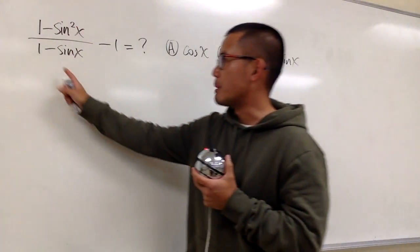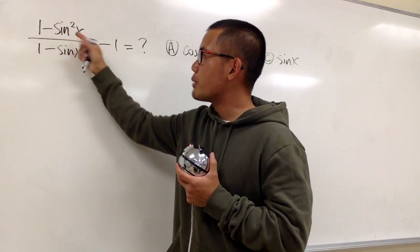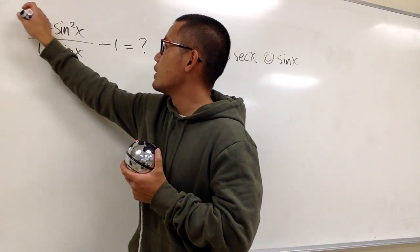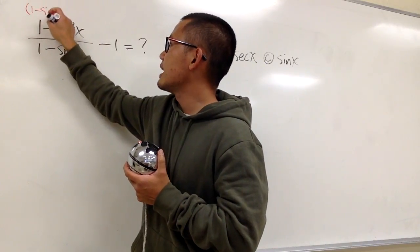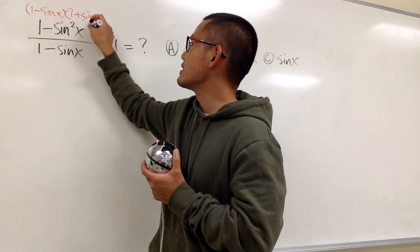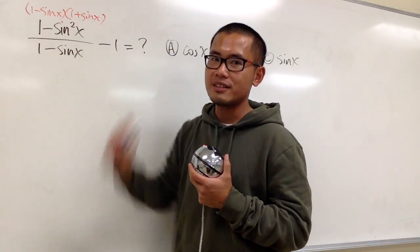Because I noticed that on the bottom, we do have 1 minus sine x, right? On the top right here, let me just go ahead and factor this out. And if I do that, I will get 1 minus sine x and then multiply by 1 plus sine x. This is the difference of two squares, and we can factor it out like that.